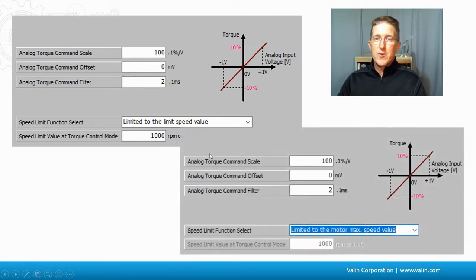So if you wanted to go any faster than that, if you want to go to the full 4,000 or 5,000 RPM of the motor, you need to change this so the limit is the motor maximum speed value.